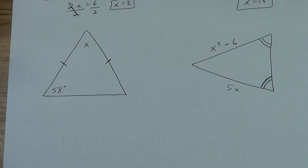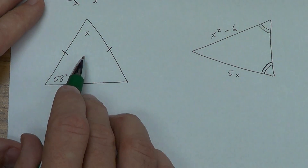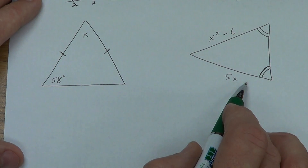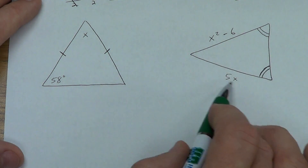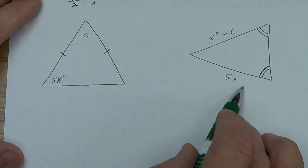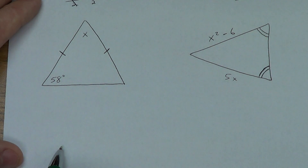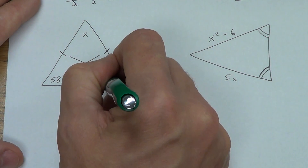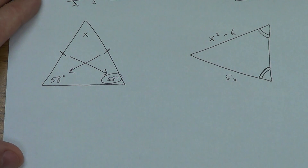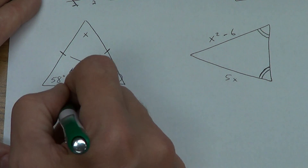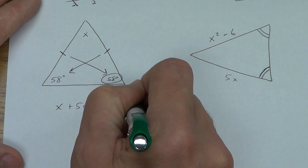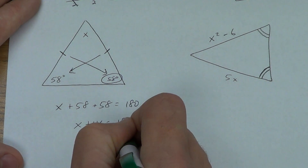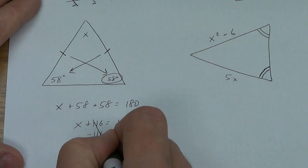Let's look at the last two. In this one, some people might think x is 58 right away — that's wrong. Work across the triangle: the congruent angles mean this side must also be 58 degrees. All three angles must add to 180: x + 58 + 58 = 180, so x + 116 = 180. Subtract 116: x = 64 degrees.